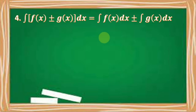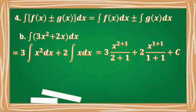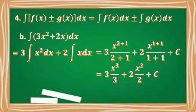Another example: the integral of the quantity 3x squared plus 2x dx equals 3 times the integral of x squared dx plus 2 times the integral of x dx, which is equal to 3 times x raised to 2 plus 1 over 2 plus 1, plus 2 times x raised to 1 plus 1 over 1 plus 1, plus C. This gives 3 times x cubed over 3, plus 2 times x squared over 2, plus C. Simplifying, we divide 3 by 3 and 2 by 2, so we have x cubed plus x squared plus C.